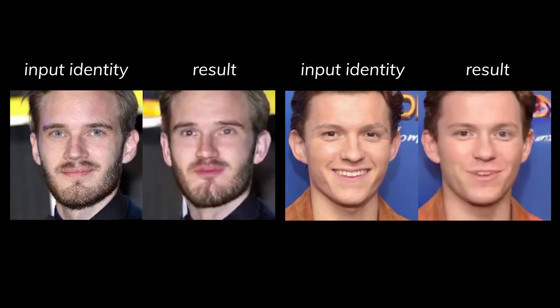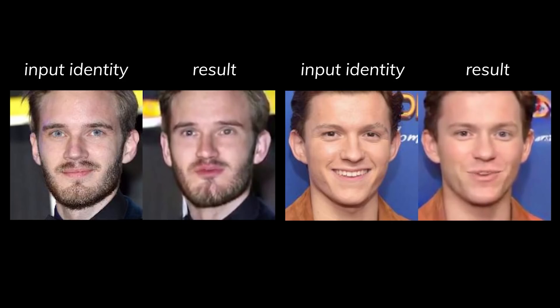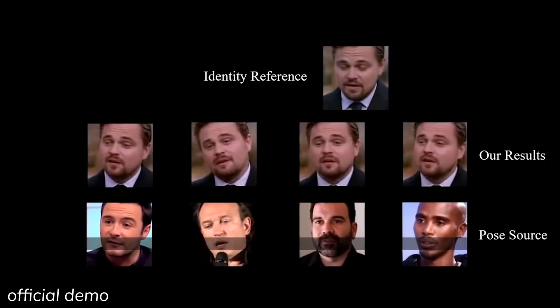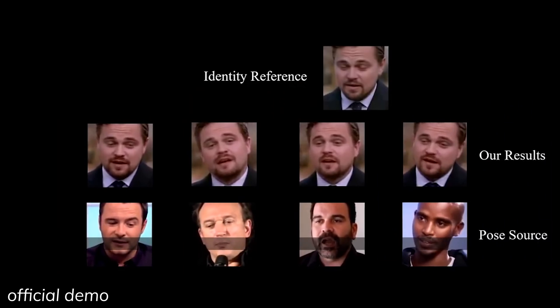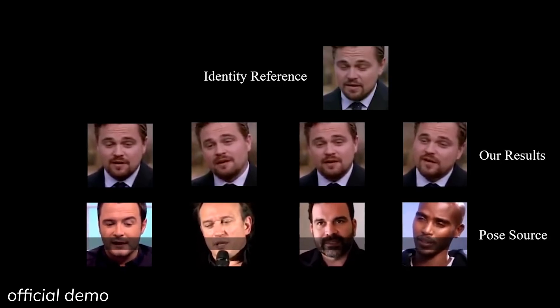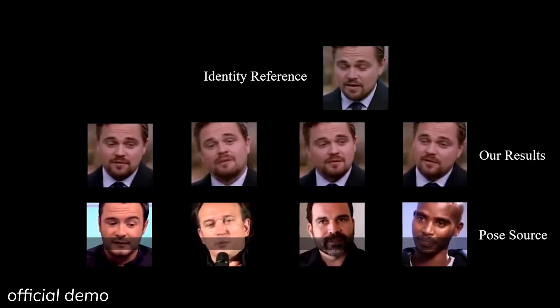PCAVS generates new facial details with limited information from the input, but there can be a consistency problem on regenerating the faces, even though it's a pretty good solution. The second part is basically the information about input poses you want to use as a reference — whether the face looks up or down, this part will transfer the head movements, aka the pose, onto the input identity.